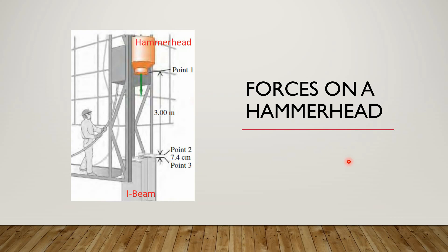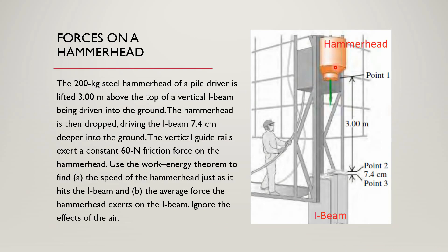Bismillah ar-Rahman ar-Rahim. Forces on a hammerhead: A hammerhead is placed at position 0.1 and the I-beam is placed at position 0.2. The distance between 0.1 and 0.2 is 3 meters. When the hammerhead is dropped, the I-beam will move downward and cover a distance of 7.4 cm, and this new position is 0.3. So the distances are: between 0.1 and 0.2 is 3 m, and between 0.2 and 0.3 is 7.4 cm.